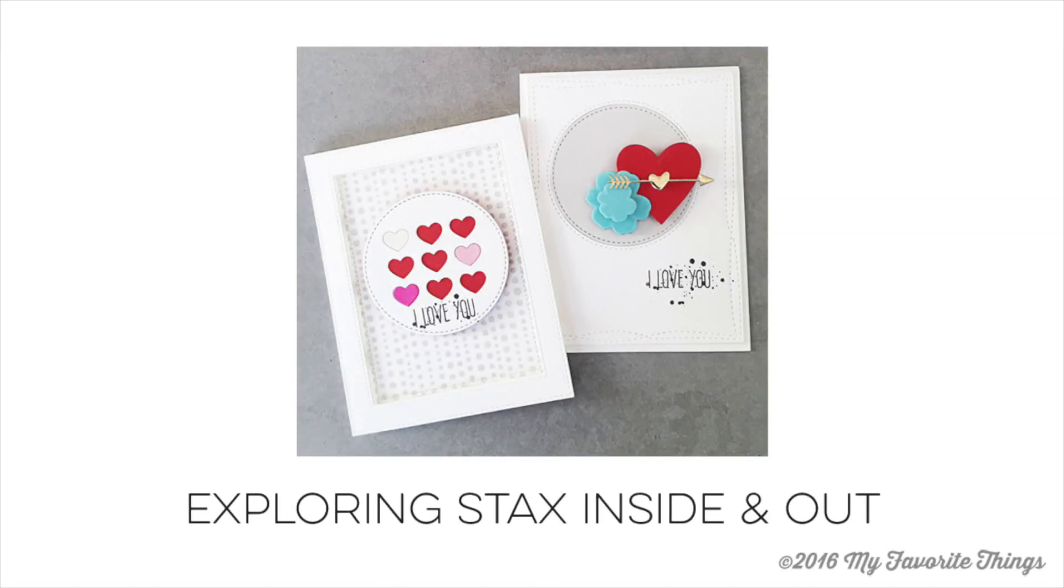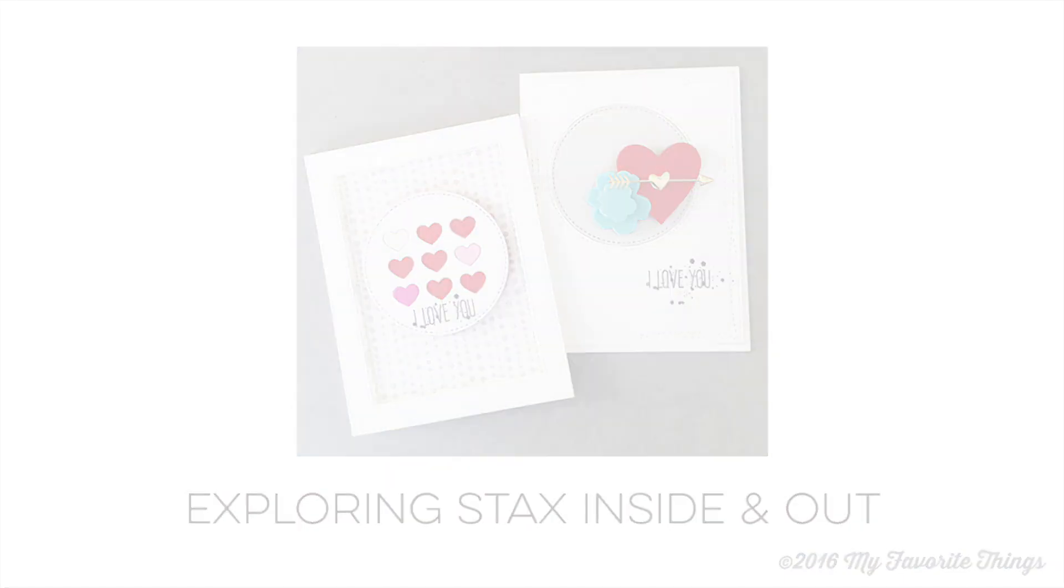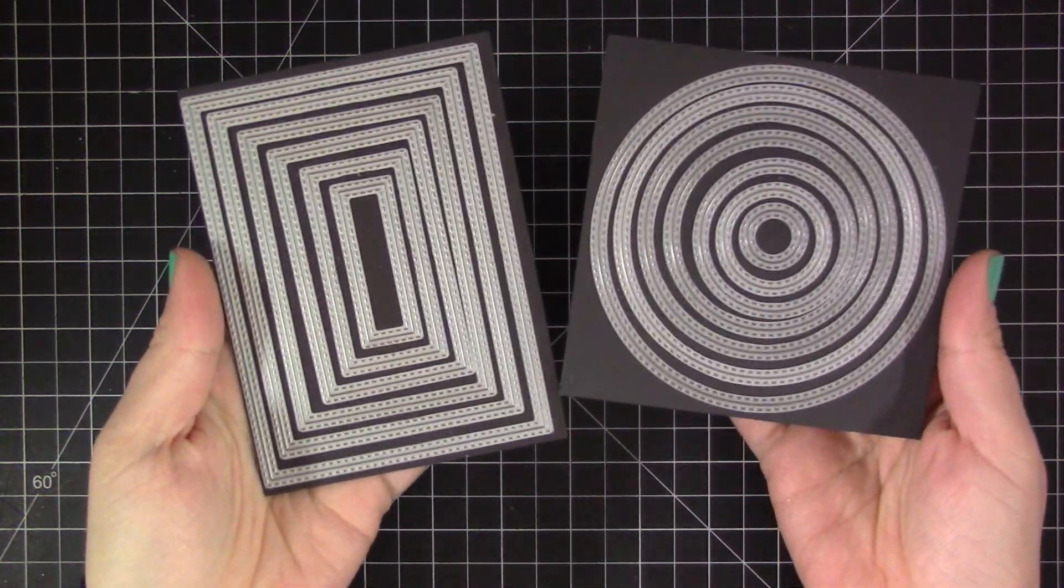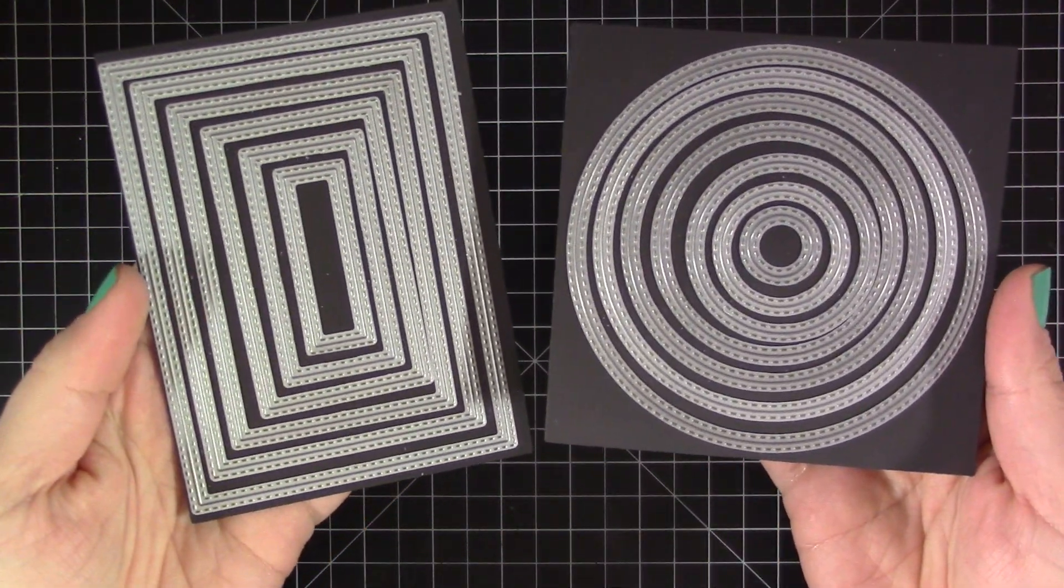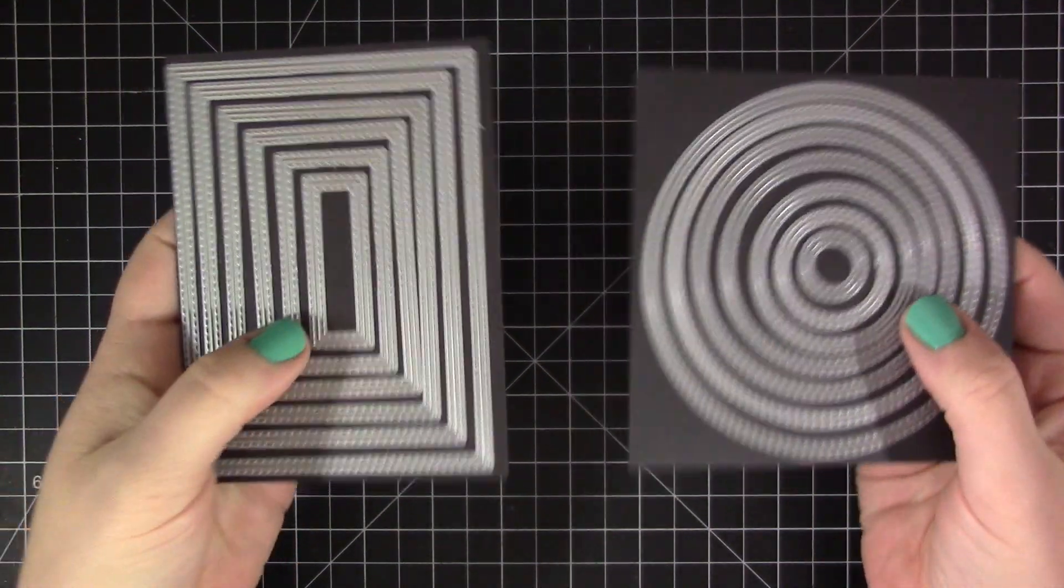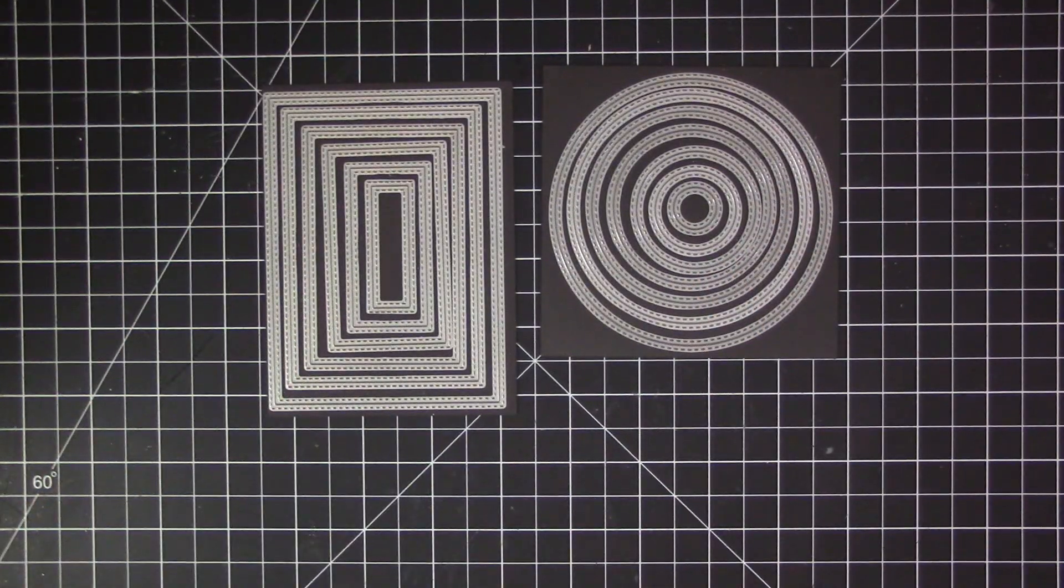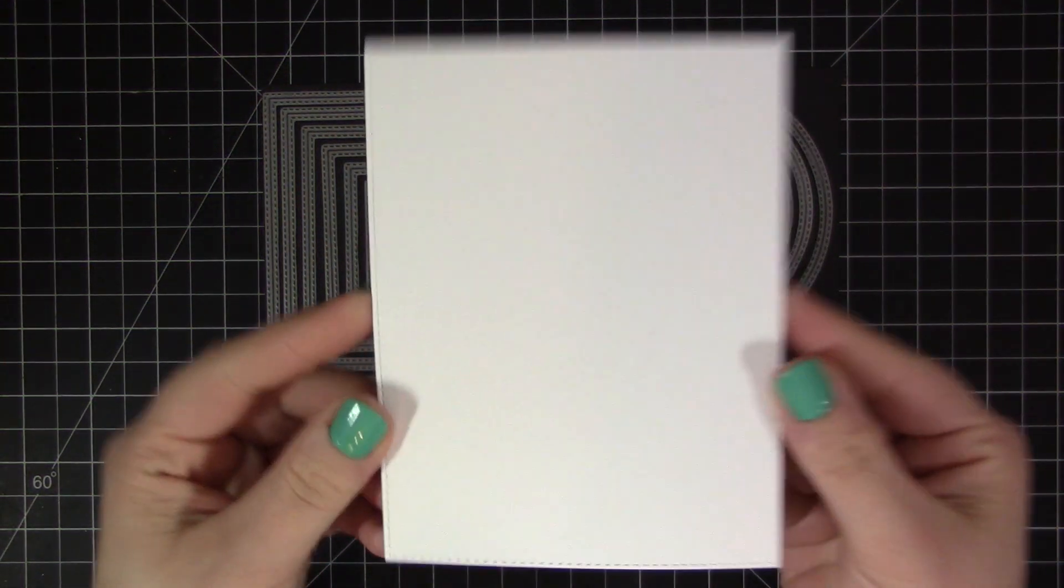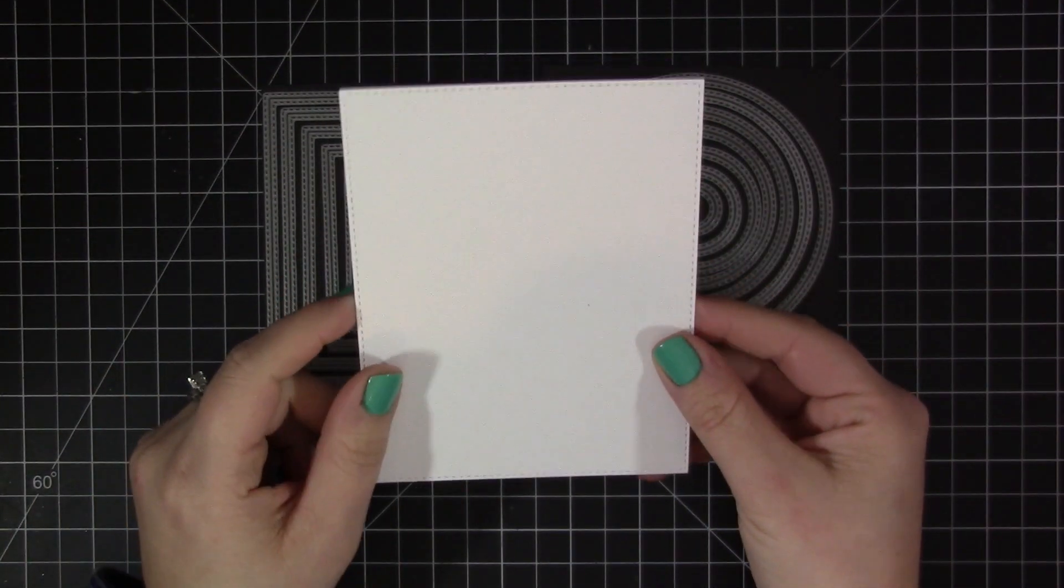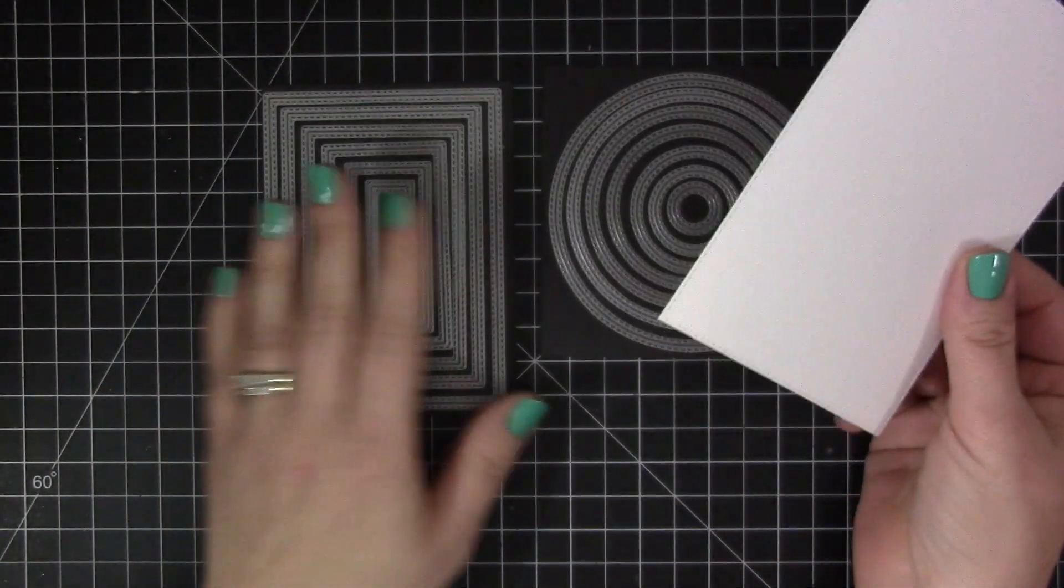Hey everyone, it's Stephanie here with a video from My Favorite Things. For this video I'm going to be recreating these two cards that design team member Keisha created using the new Inside and Out Stitched Stacks dies from the February 2016 release. These come in four different shapes: rectangle, square, circle, and oval. Today I'm going to be concentrating on the rectangle and the circle ones to create these cards.